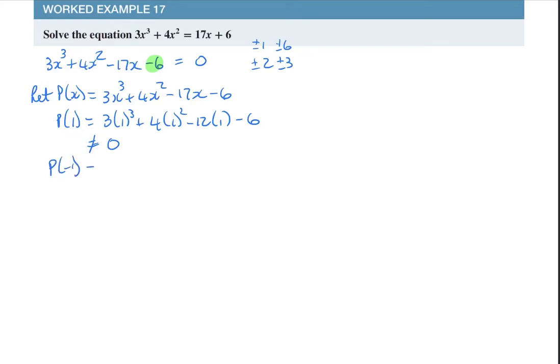So P at negative 1 is not a factor. What about negative 1? So it's 3 times negative 1 cubed, 4 times negative 1 squared minus 12 times negative 1, take away 6. I've got negative 3, I've got positive 4, plus 12, that's also not equal to 0.